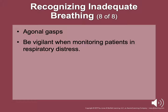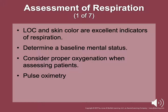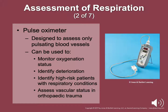Pulse oximetry is designed to assess only pulsating blood vessels. It can be used to monitor oxygenation status, identify deterioration, identify high-risk patients in respiratory conditions, and assess vascular status in occupational trauma. Peak expiratory flow measurement helps evaluate bronchial constriction. Increased peak expiratory flow suggests the patient is responding to treatment. Decreasing peak expiratory flow may indicate deterioration. It varies based on sex, height, and age, and should be performed at least three times with the best reading recorded.